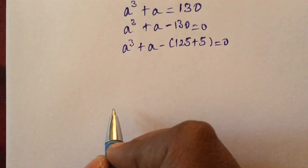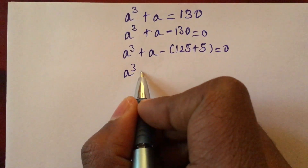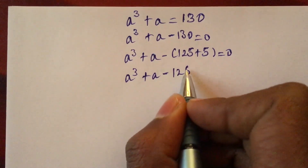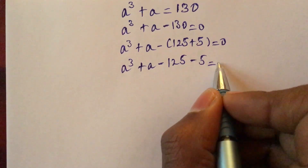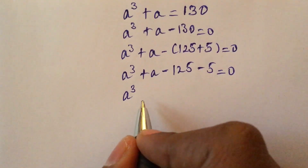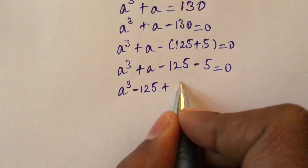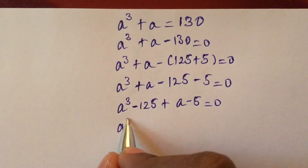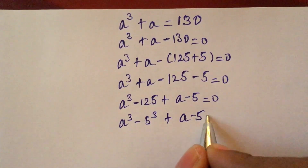Rearranging the terms: a cubed minus 125 plus a minus 5 equals 0. Here, we note that a cubed equals 5 cubed, since 5 cubed equals 125, so we have a cubed minus 5 cubed plus a minus 5 equals 0.